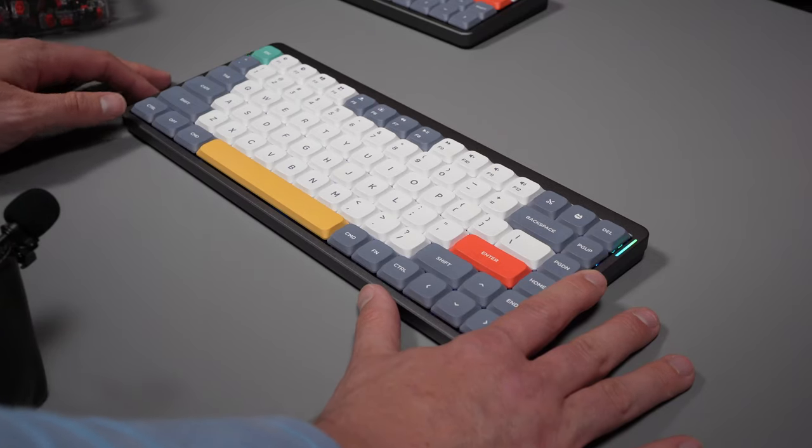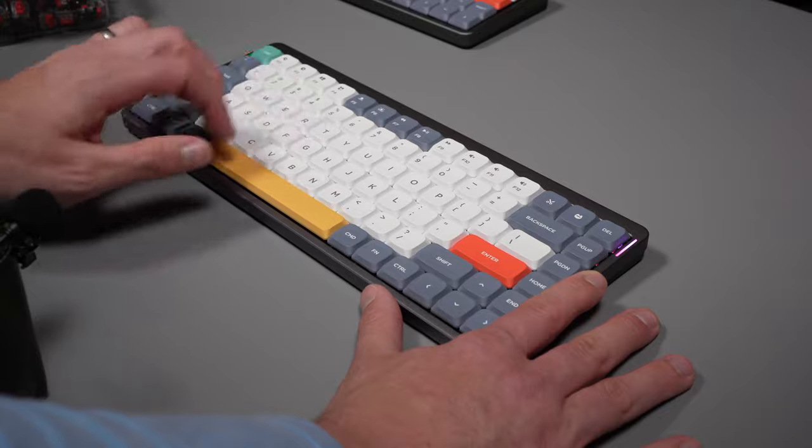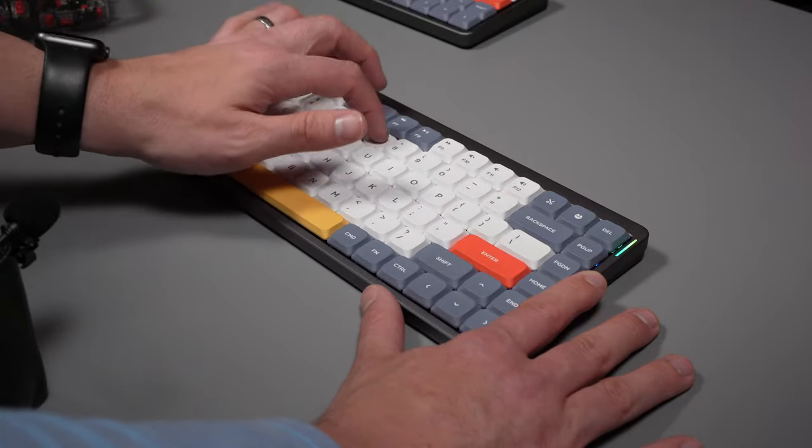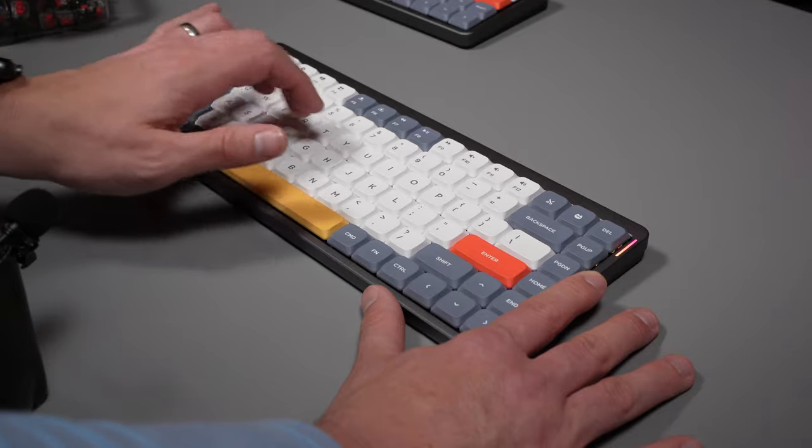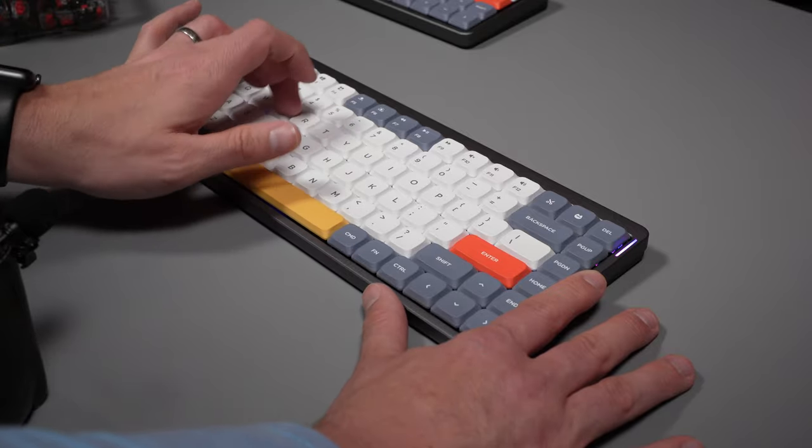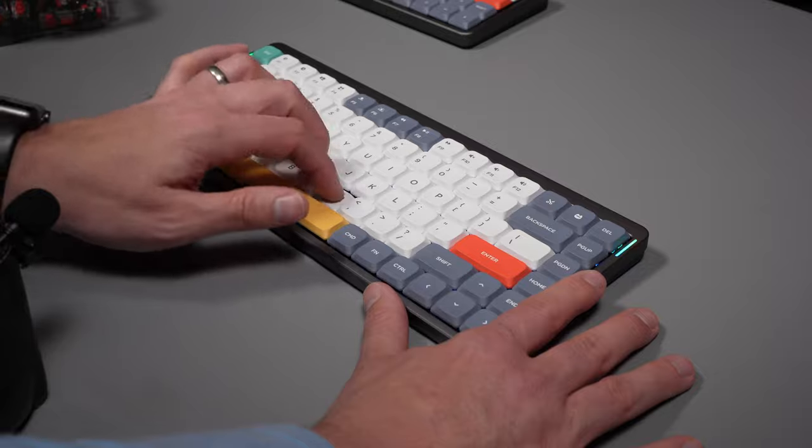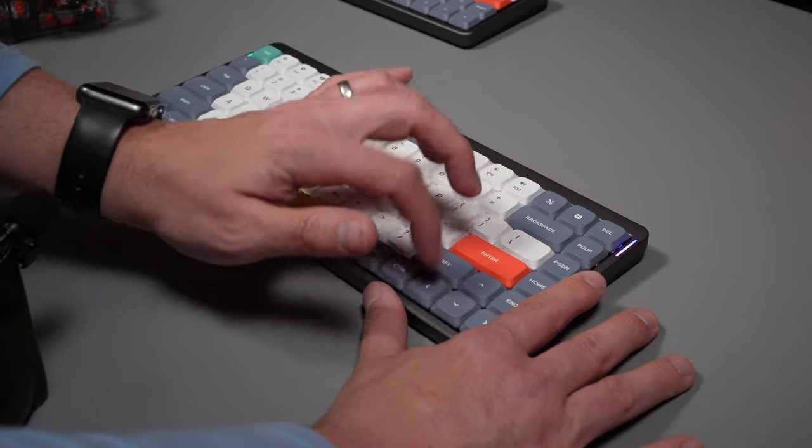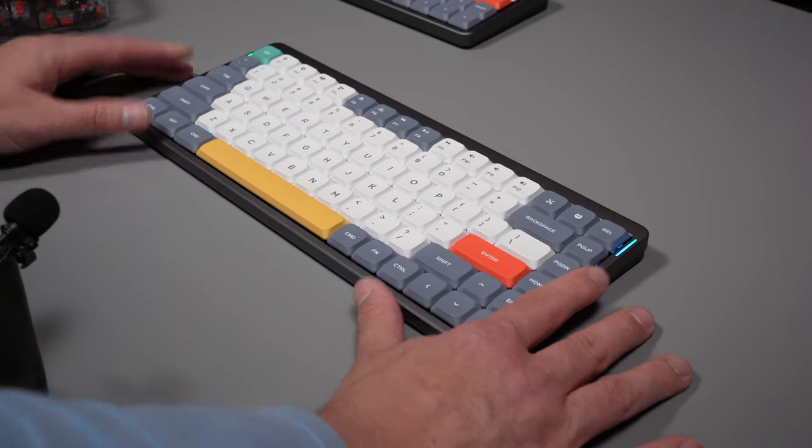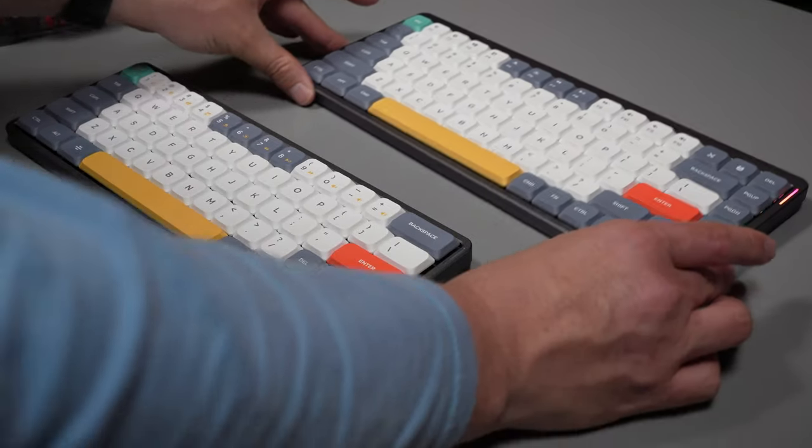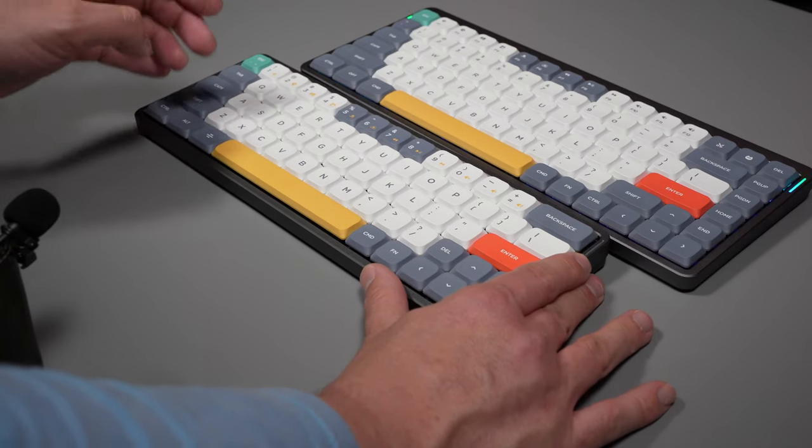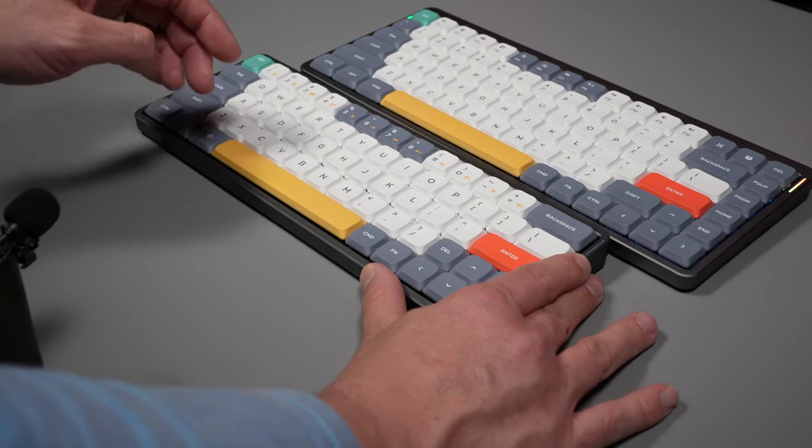Okay, this is the blue switch test on the Air 75. And this is the brown switch on the Newfeet Air 60.